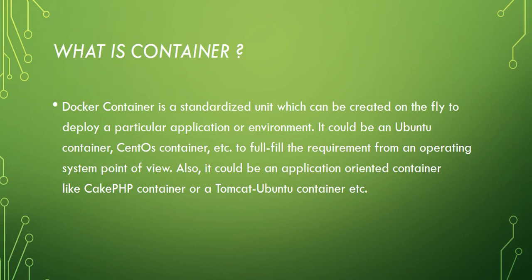A container can fulfill requirements from an operating system point of view — like the Tomcat example. You can create a Tomcat container by pulling the Tomcat Docker image from Docker Hub or a Docker registry, then create an image using the container on the fly to fulfill the operating system requirement. It could be an application-oriented container like a PHP container, a Tomcat container, an Ubuntu container, and so on.